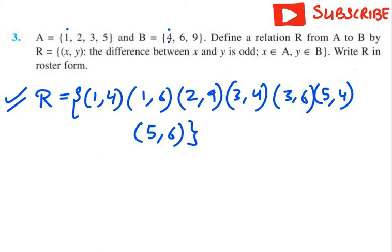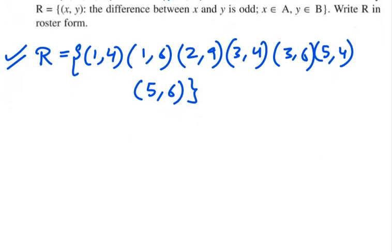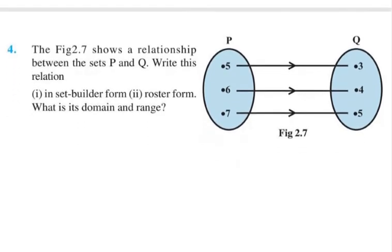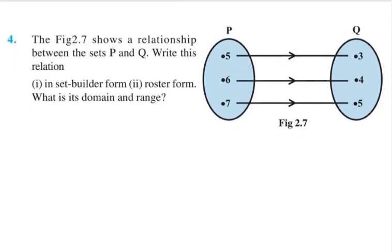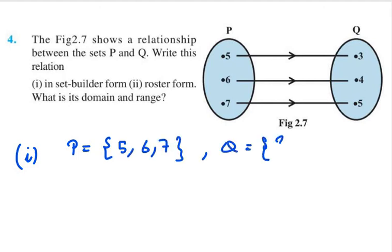Now we need to do question number 4. So question number 4 says here we are given with P and Q. These are two sets. Write this relation in set builder form, then in roster form, then what will be its range and domain. So according to this given figure, P has elements 5, 6 and 7 and Q has 3, 4 and 5.